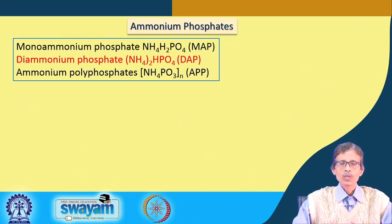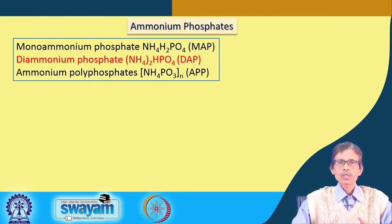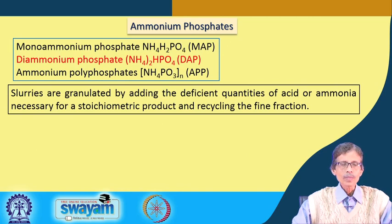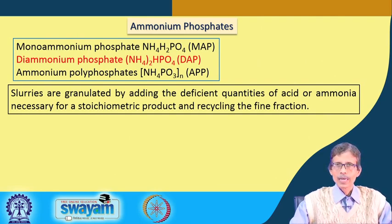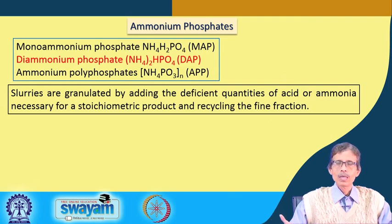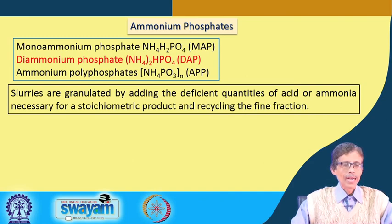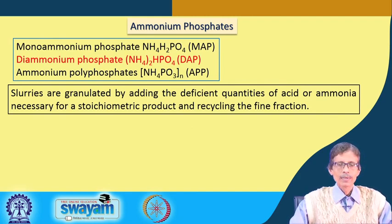We expect to get the ammonium and phosphate parts from APP slowly through hydrolysis in the soil medium, making it a slow-release mineral fertilizer. The challenge of making these fertilizers is not just producing a powder - you must have the typical granulated form, as granules are thrown into the agricultural field. Initially, slurries are granulated by adding deficient quantities of acid or ammonium necessary for stoichiometric product and recycling the fine fraction.